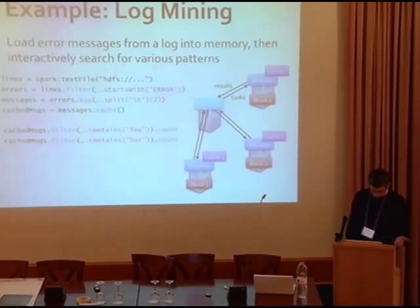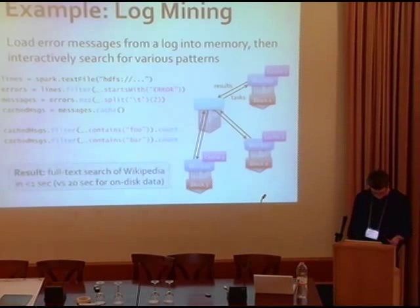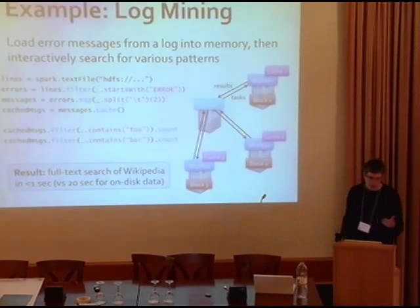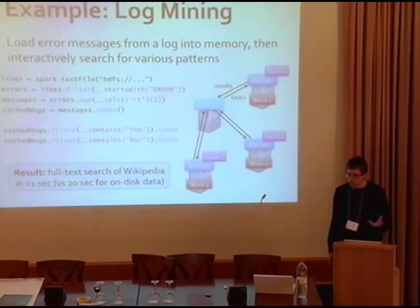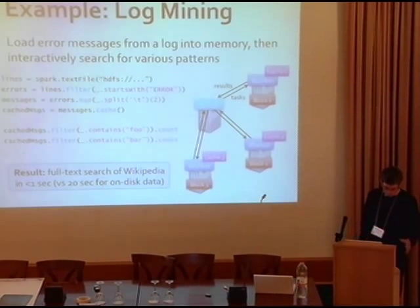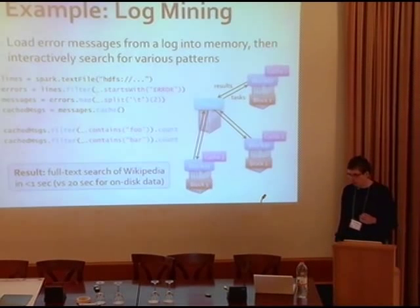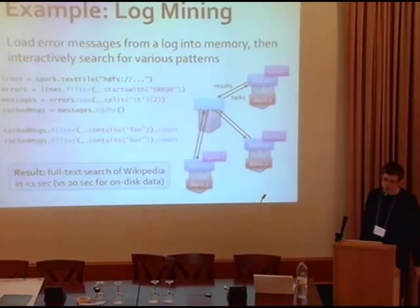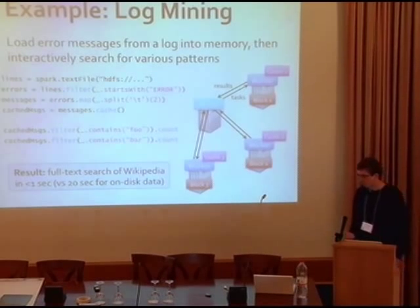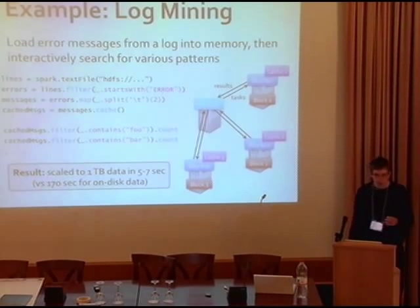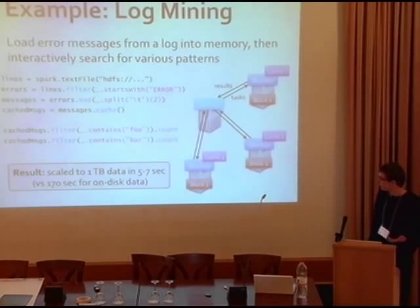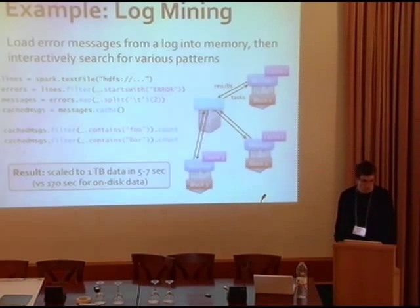You're not limited to filters and maps — you can do group-bys, joins, and all kinds of other operations. To give a sense of speed: we did a full text search of Wikipedia, a 50-gigabyte dataset on 20 machines. It takes about 20 seconds with Hadoop or with Spark on disk. It takes less than one second with a cached dataset — that's the difference between memory and disk performance. We've also scaled this to one terabyte on 100 machines, where a full text search still takes about five seconds.